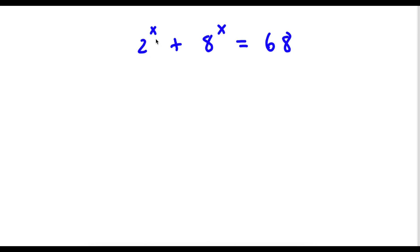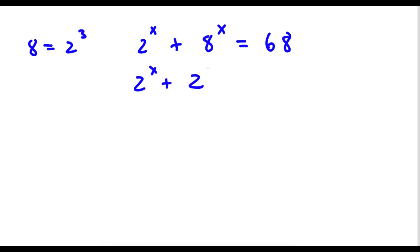So I have 2 to the power of x plus 8 to the power of x is equal to 68. Now 8 here is the same thing as 2 to the power of 3. So now I have 2 to the power of x plus 2 to the power of 3, to the power of x, is equal to 68.